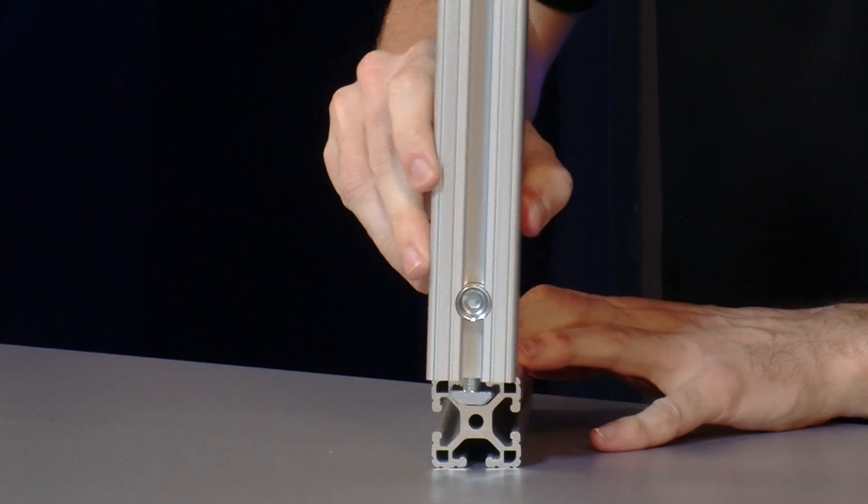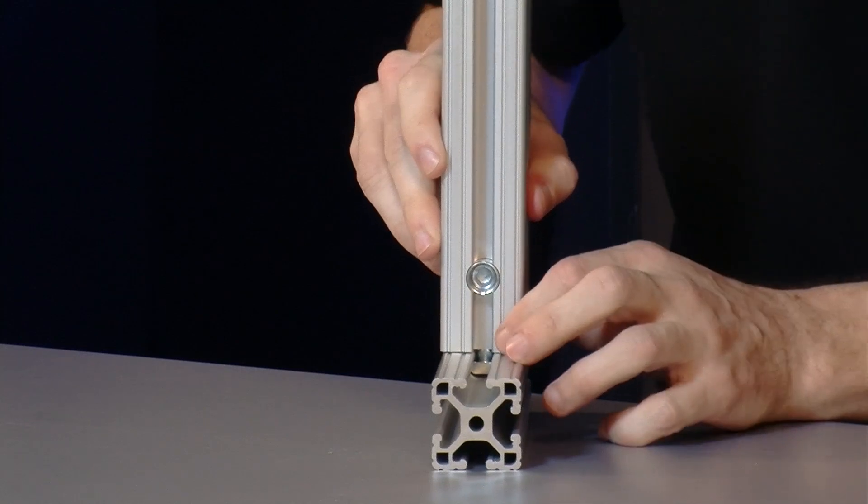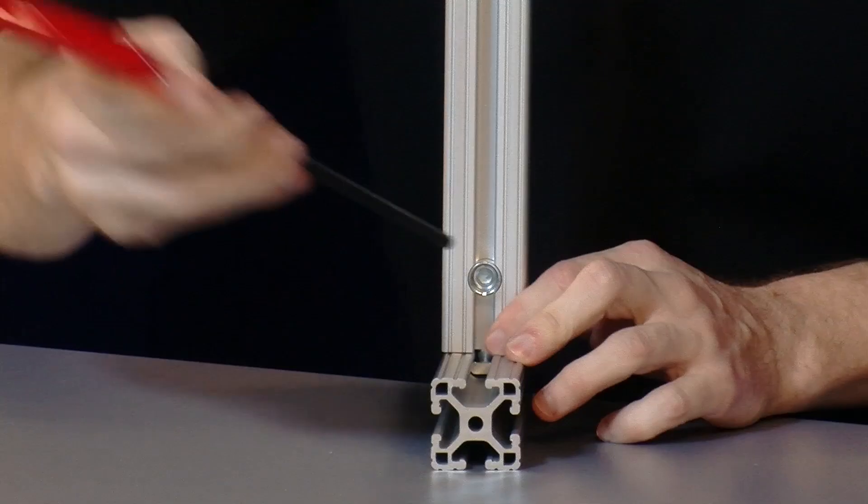From there we'll take the other bar, slide the connector in, find our desired location, and tighten down with our wrench.